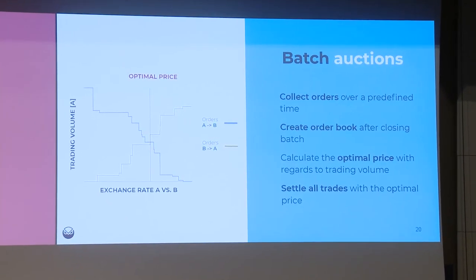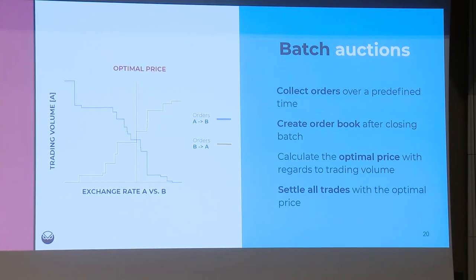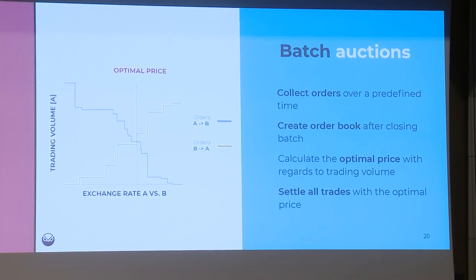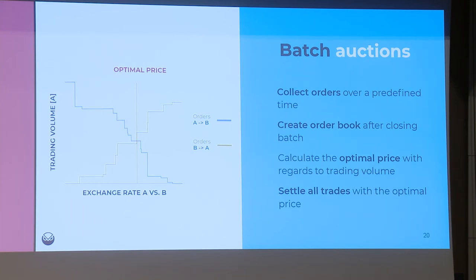I'm really excited about batch auctions. We collect limit orders over time — the blue line represents buy orders for token B with token A, the orange ones the inverse trade. After some minutes we close the batch, giving us an overlapping order book. We then calculate the optimal price — exactly where the order books meet — because this price allows the highest trading volume to be matched. Once we have this optimal price, all orders settle at exactly that price, which we believe gives a very fair price outcome.